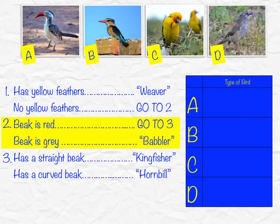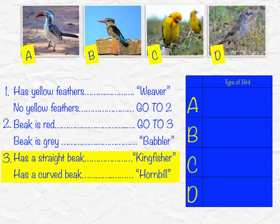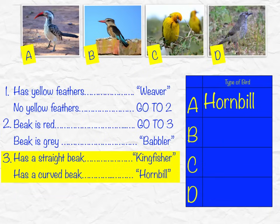In this case the beak is red for bird A, so we move on to three. If the beak is straight we can identify it as a kingfisher; if it's curved we identify it as a hornbill. You can clearly see in photograph A that the bird has a very curved beak, so we write hornbill for A — we've identified the first one.